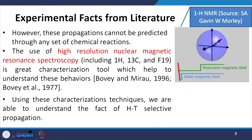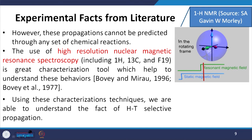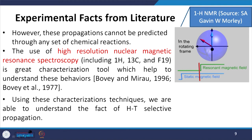These propagations cannot be predicted through any set of chemical reactions alone. The use of high-resolution NMR — Nuclear Magnetic Resonance Spectroscopy — including 1H, 13C, and F19 NMR, has been found to be a reasonably good approach for characterization of these developed polymers. This is extremely helpful to understand the behavior of whatever polymer is being generated, and helps confirm head-to-tail selective propagation.